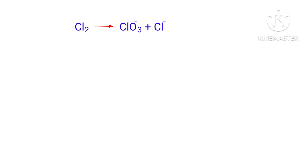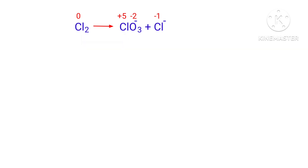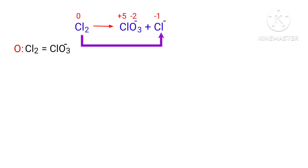Figure the reducing and oxidizing agents by the rules of assigning oxidation numbers. In this equation, Chlorine has a charge of 0 and it's changing into plus 5, so Chlorine is being oxidized. The Chlorine has a charge of 0 and it's changing into minus 1, so Chlorine is being reduced.